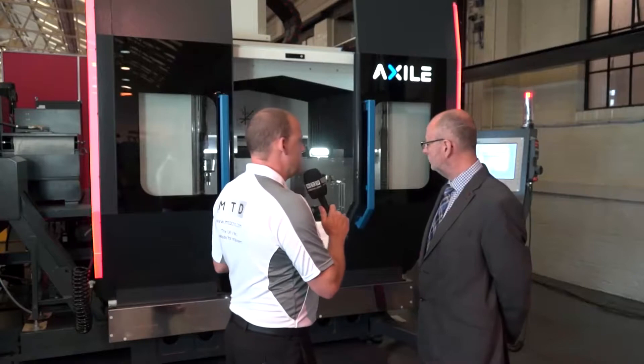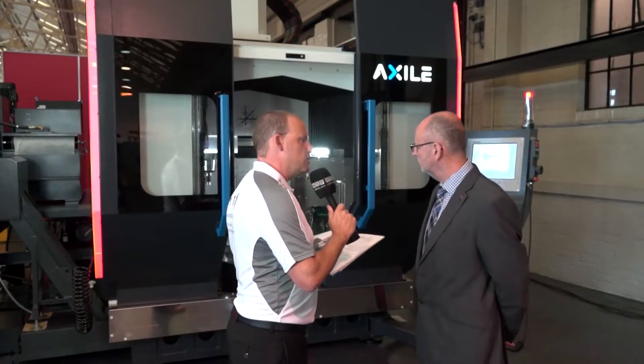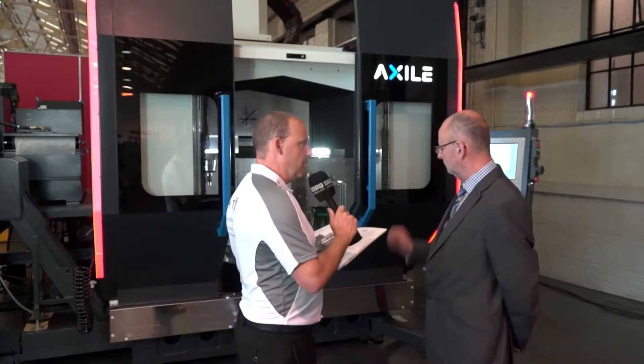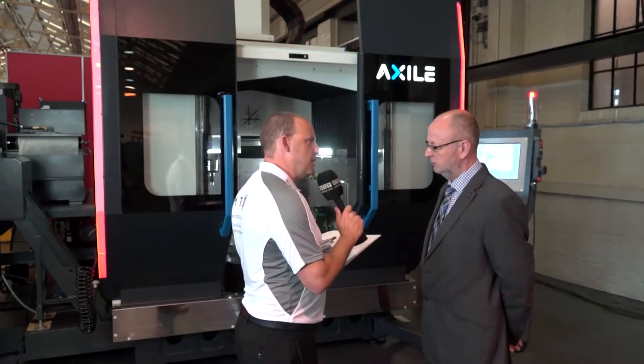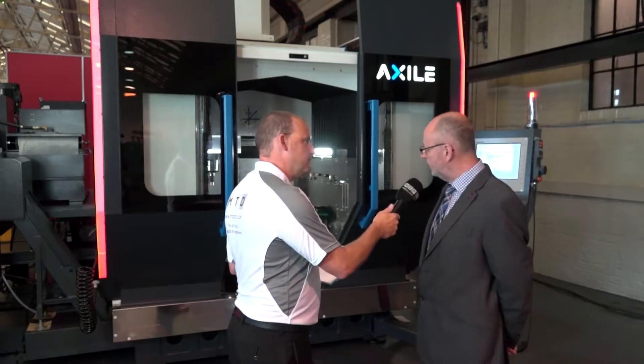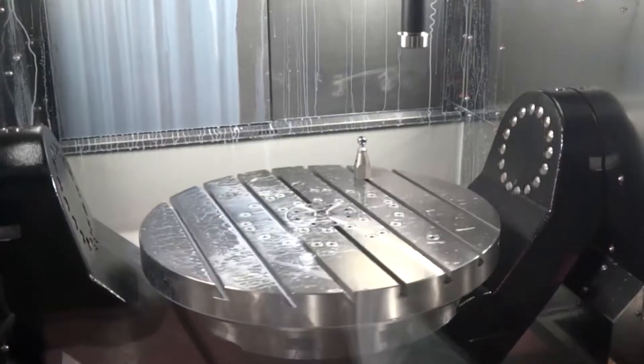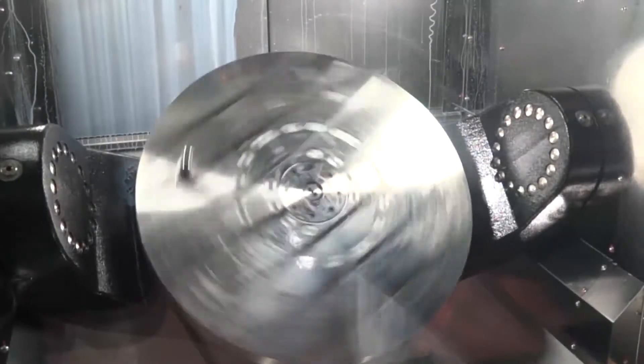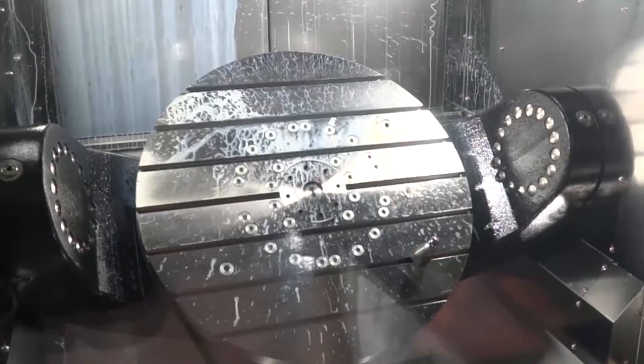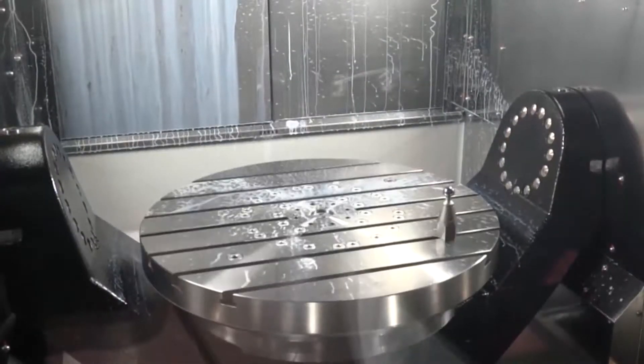When I first looked at this machine with the doors shut, I was expecting a much smaller table and a much smaller working envelope. I was quite surprised to see the size of what you can actually put and the weight of part you can put on this table. Tell us about that. So it's an 800 millimeter table diameter. You can put 1.3 ton of table loading on there. You can go a component 500 millimeters high, and you can overhang by 950 millimeters diameter component.